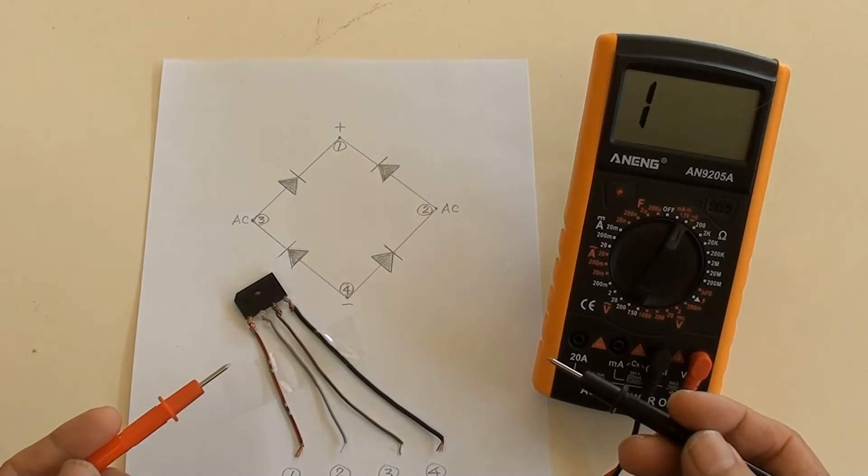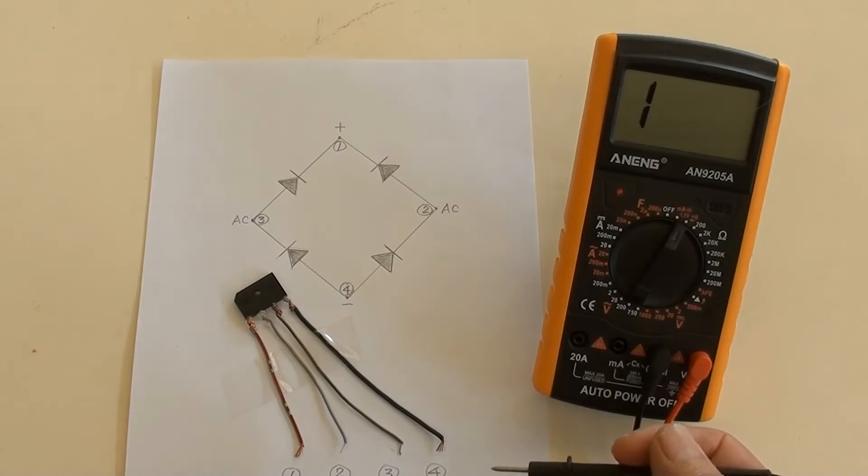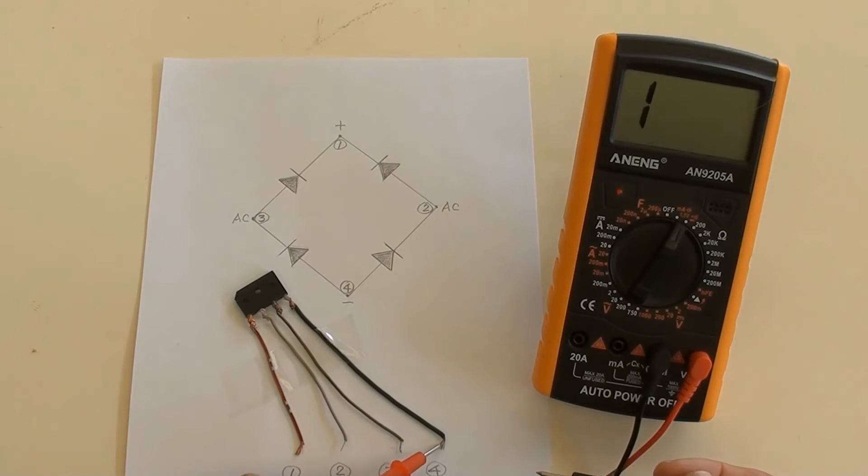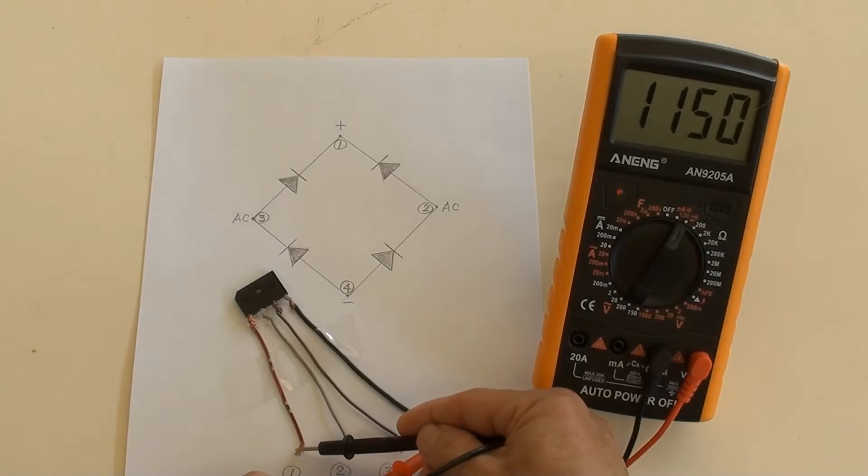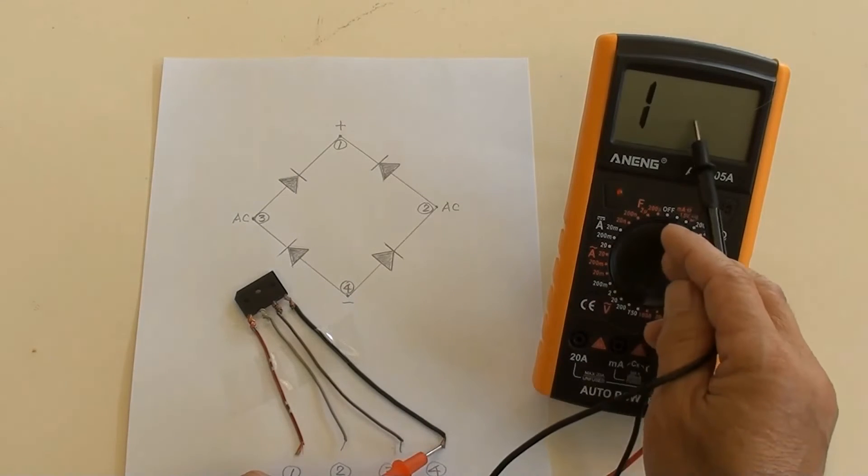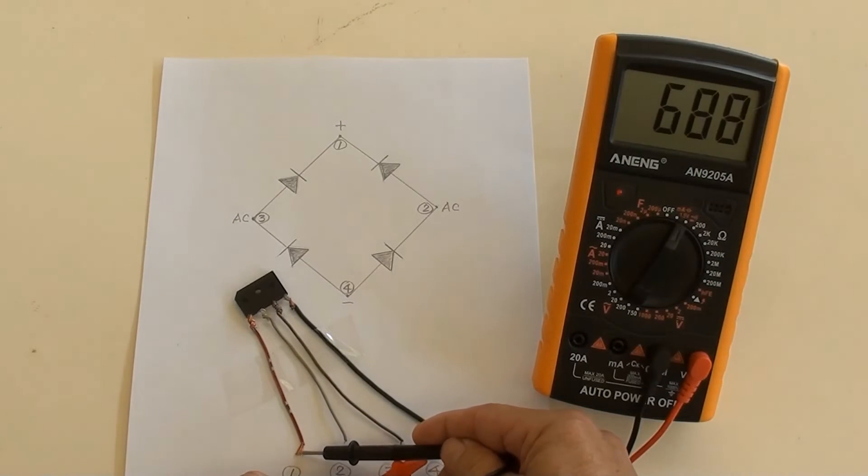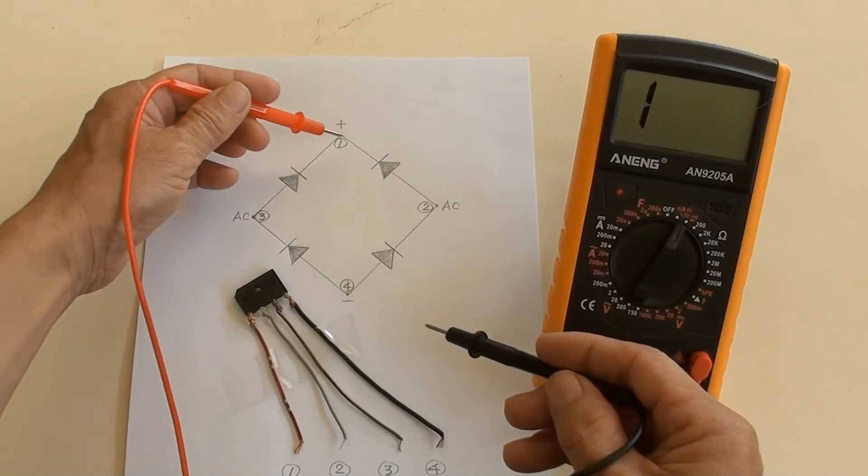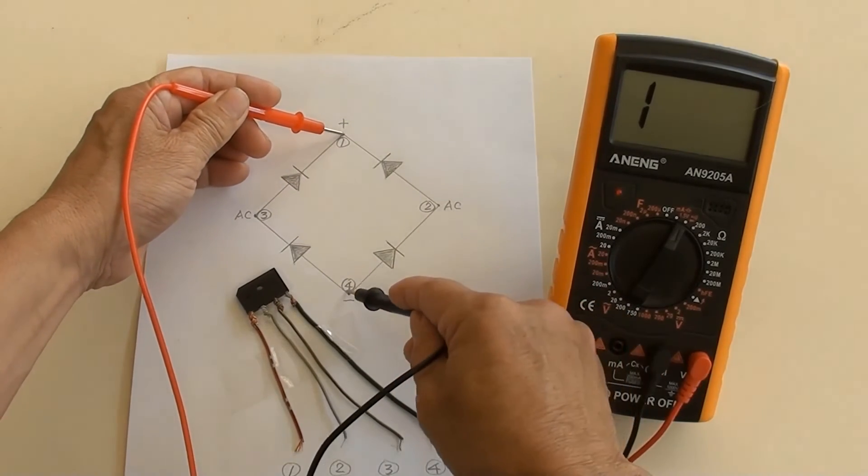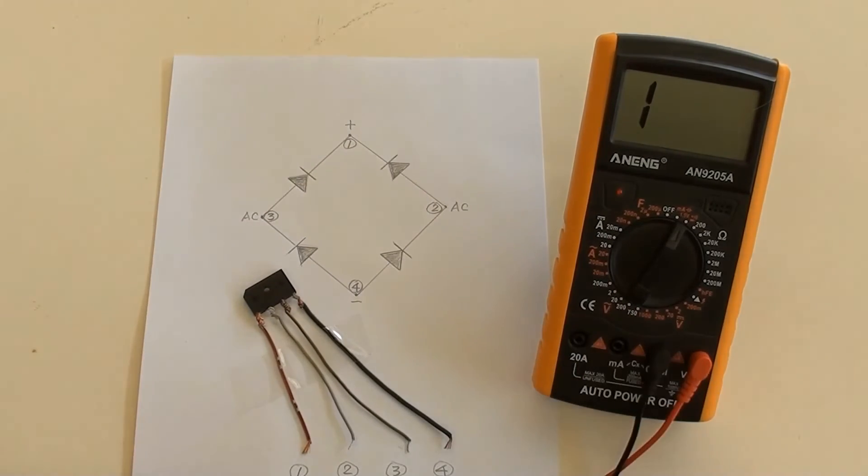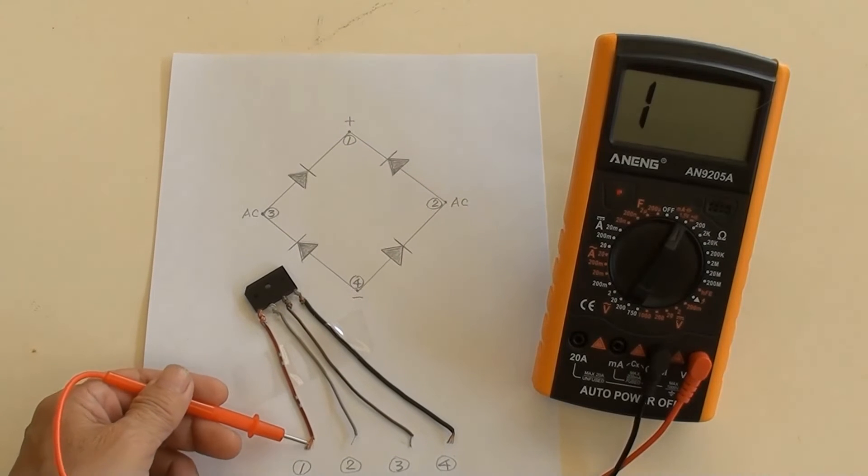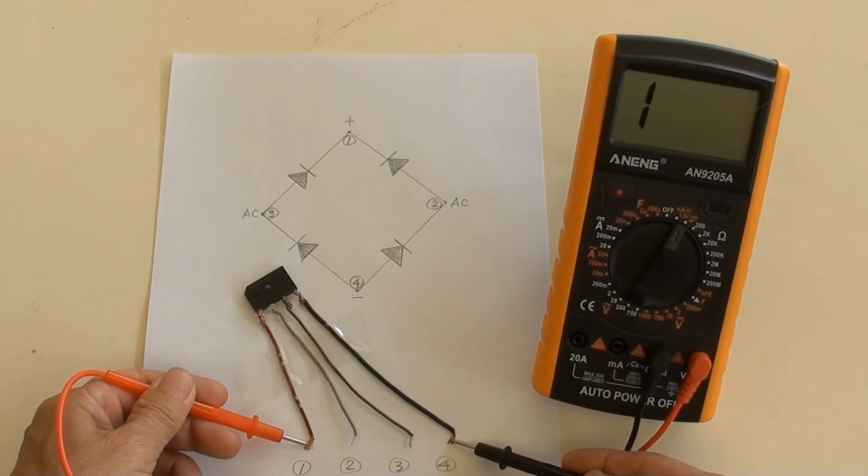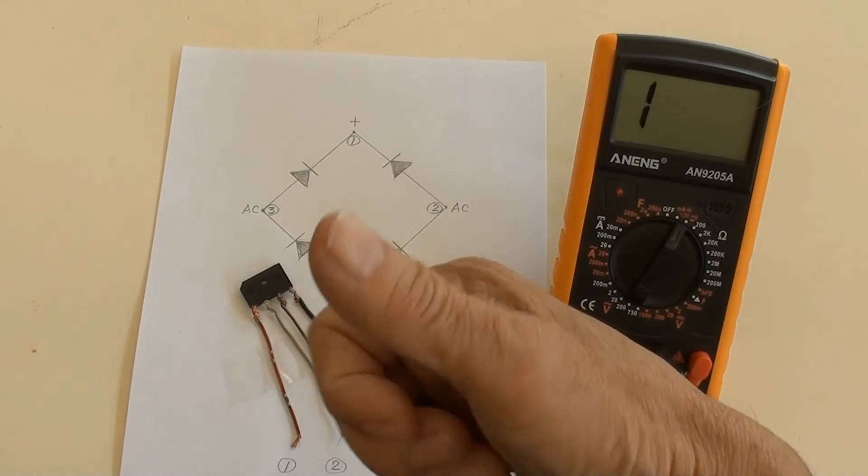Between one and four should not be continuance because of reverse polarity. All good.